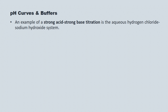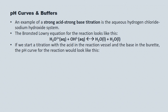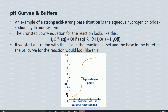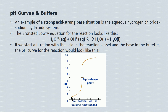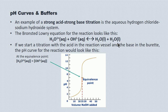An example of a strong acid/strong base titration is the aqueous hydrogen chloride/sodium hydroxide system. The Bronsted-Lowry equation for the reaction looks like this. If we start a titration with the acid in the reaction vessel and the base in the burette, the pH curve starts very low — at 1 or lower — because you're dealing with a very strong acid. At the end it approaches 13 or 14 because you're adding a very strong base. At the equivalence point the amount of acid is chemically equivalent to the amount of base, and we see that here at pH 7, because all the acid has been neutralized by all the base and what we're left with is water.